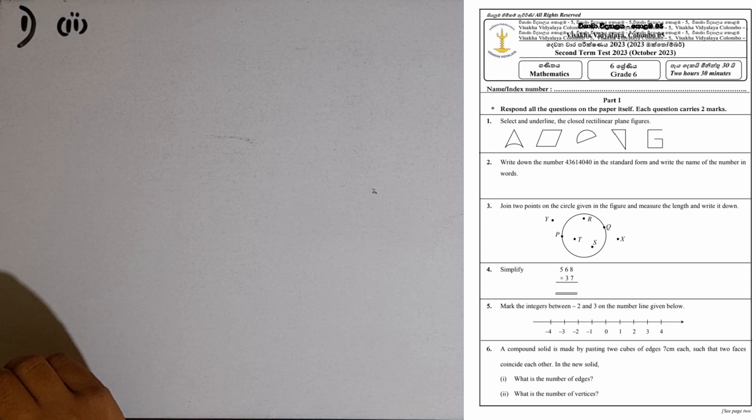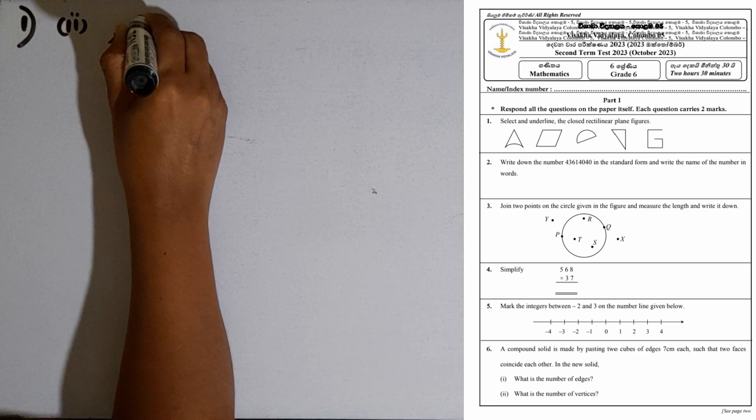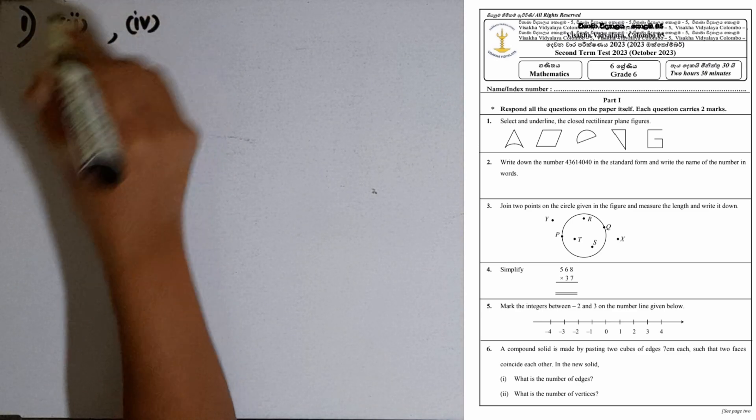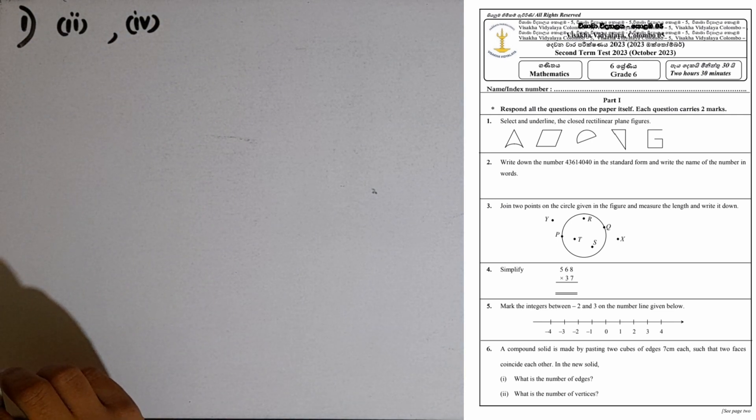Third one also incorrect, we have a curved line segment. Fourth one correct. Number five incorrect. Although it has straight line segments, it is not a closed plane figure, it is an open plane figure.